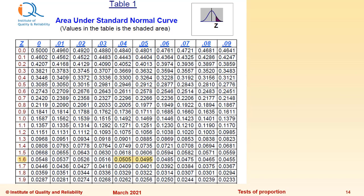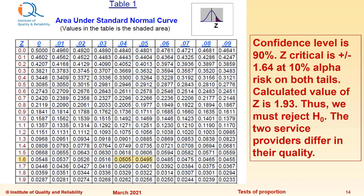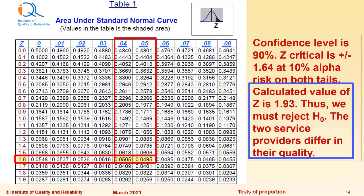Now we use the table of standard normal distribution. The confidence level is 90%, so the critical value of Z statistic with alpha risk on both tails—alpha risk is total 10% divided on two tails would be 0.05 on each tail. So the critical value of Z statistic is 1.64 on both tails, plus and minus 1.64. Calculated value of Z is 1.93 which is crossing the critical value of 1.64 on the right side. Thus we must reject H0. The two service providers therefore differ in their service quality significantly at 90% confidence level.